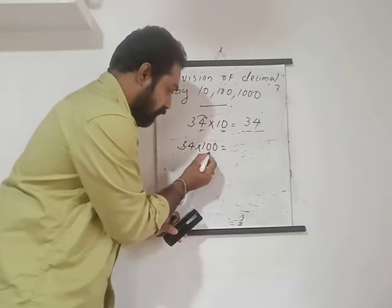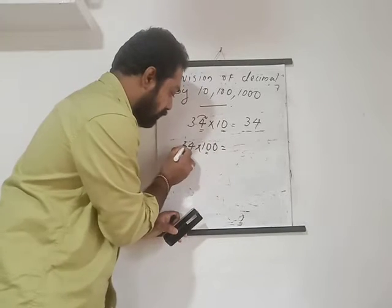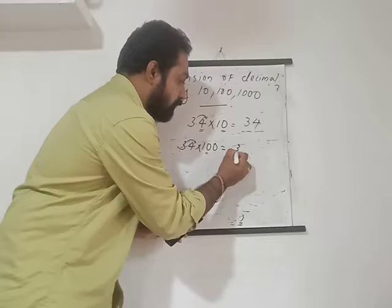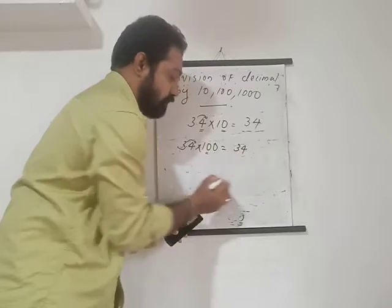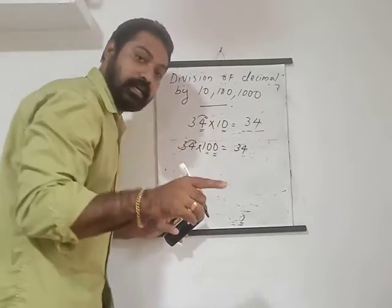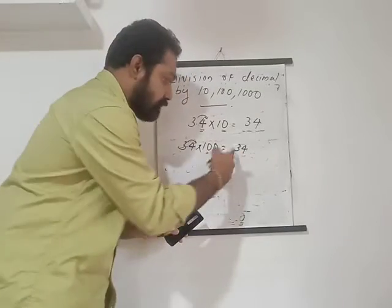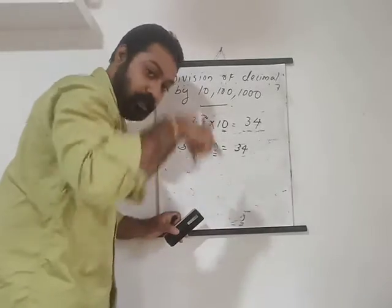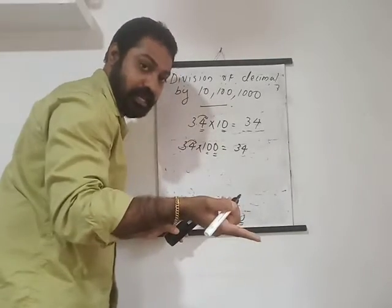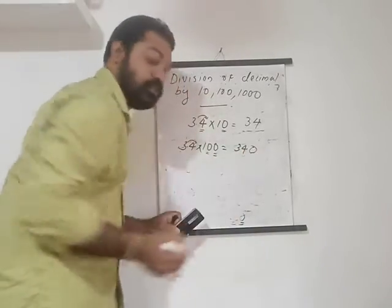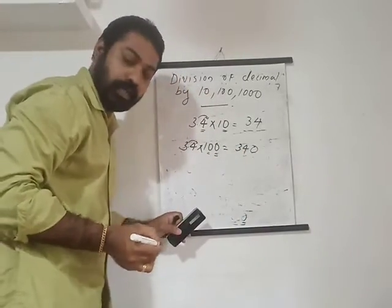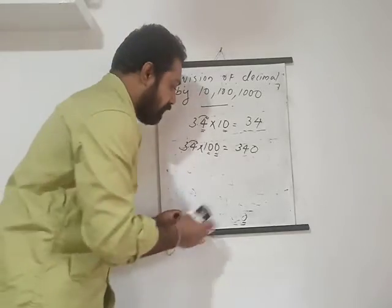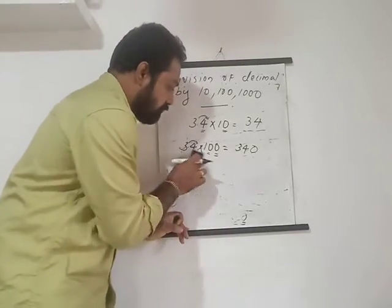Another example: 3.4 × 100. In the case of 10, the point shifts one place to the right, giving 34. But 100 has two zeros, so the point shifts two places. There is no other digit after the 4, so we put a zero, and it becomes 340. This is the multiplication rule we already learned.